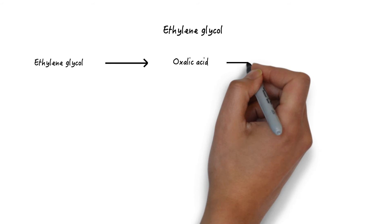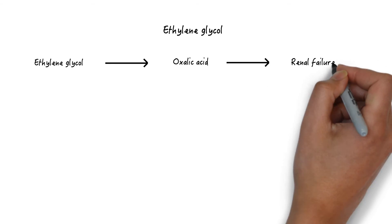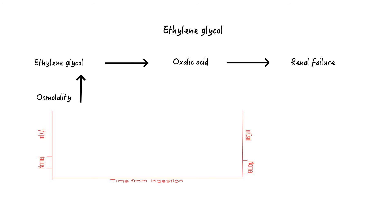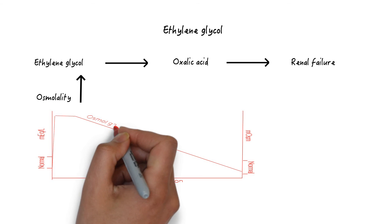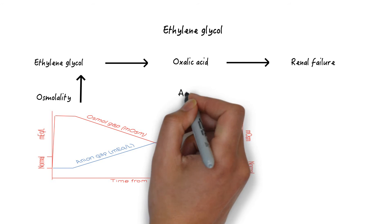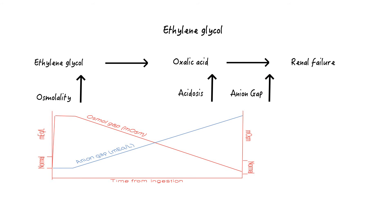Ethylene glycol is metabolized to oxalic acid, which leads to renal failure, and combines with calcium to precipitate as calcium oxalate monohydrate crystals in the renal tubules. Early after exposure, serum osmolality will be increased because ethylene glycol is osmotically active. After several hours, serum osmolality will decrease, and the acidic metabolite oxalic acid will cause an acidosis, an increasing anion gap, and eventually renal failure at around 24 to 72 hours post-ingestion. While fomepizole will block the formation of oxalic acid, if your patient presents with acidosis, an increased anion gap, or elevated creatinine, you should consult a nephrologist, because toxicity has already developed.